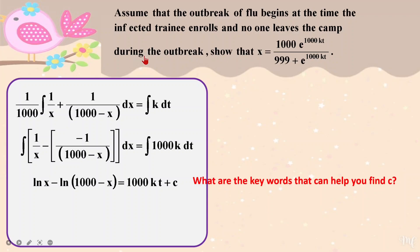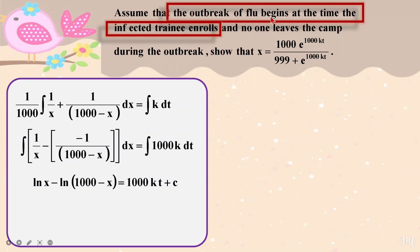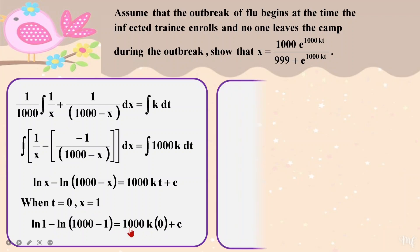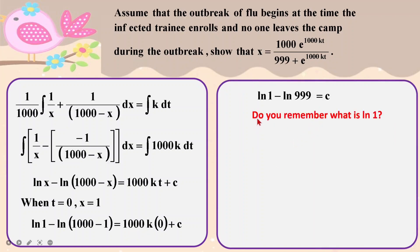The clue here is: the outbreak of flu begins at the time the infected trainee enrolls. That is the clue I'm going to use. Following the question, when the person came in, the outbreak started. So at t equals zero, there is only one person infected. I will use that as a clue to fill in and find my C. Filling that in, I will get the value of C.